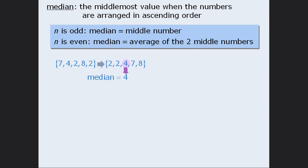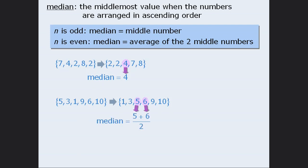To find the median of this set, we will first rearrange the terms as usual. Since this set has an even number of values, there will be two middle numbers. So to find the median here, we need to find the average of these two numbers, which is 5.5.